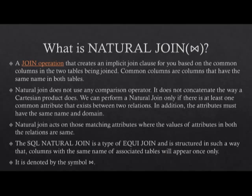Let me just show you that slide. Natural join is a join operation that creates an implicit clause for you based on the common columns of the two tables being joined. Common columns are columns that have the same name in both tables. Natural join does not use any comparison operator, and it does not concatenate the way a Cartesian product does. We can perform a natural join only if there is at least one common attribute that exists between the two relations, and the attributes must have the same name and domain.